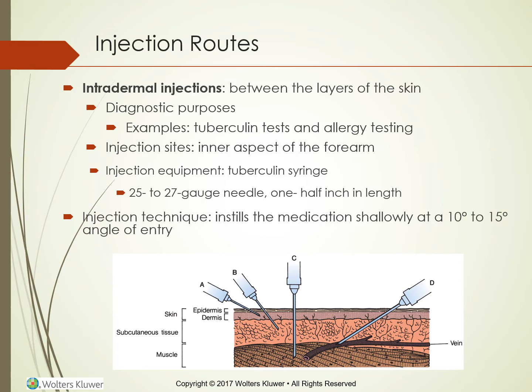This picture shows a cross-section of skin, subcutaneous tissue, and muscle. For intradermal, picture A, you are injecting into the epidermis. Picture B shows injection into the subcutaneous tissue at a 45 degree angle. Picture C shows injection into the muscle at a 90 degree angle. Picture D shows passing through the subcutaneous tissue into a vein for IV access.